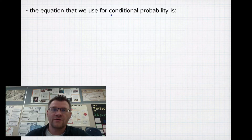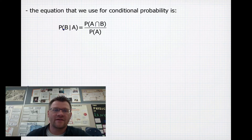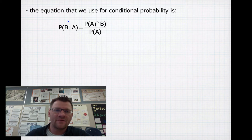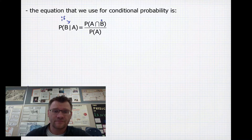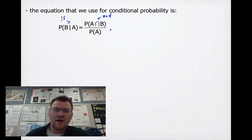The equation we use for conditional probability is: probability of B given A — meaning the probability of B if we already know A has occurred — equals the probability of A and B both happening, divided by the probability of just A occurring.